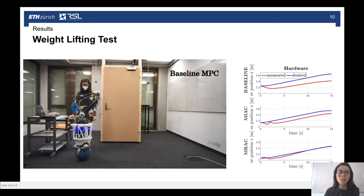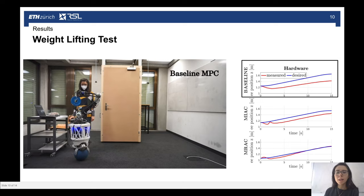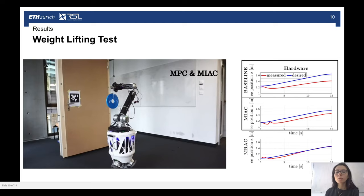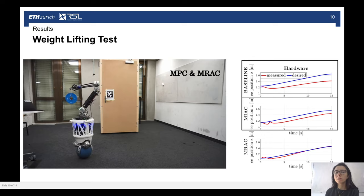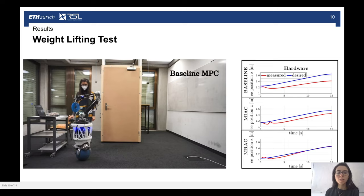In a second scenario, the robot should lift an unknown weight of 2 kg to the desired height. Also, in this case, the baseline MPC has the largest tracking error and cannot fulfill the task. The MPC with model identification adaptive controller performs worse than in the previous scenario because the momentum observer is influenced by noise and bias in the actuator torque measurements and this leads in turn to faulty environment estimates. The MPC and MRAC controller is the one that performs best and leads to convergence of the tracking error.